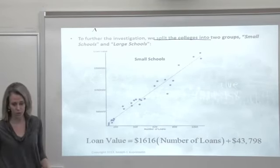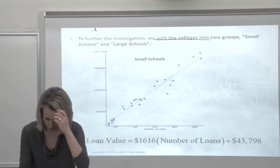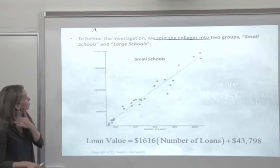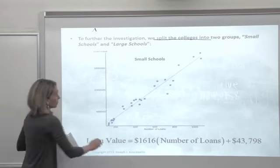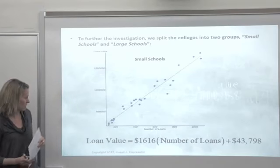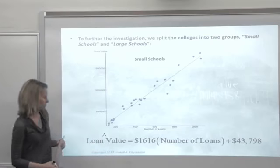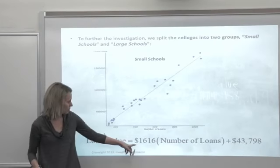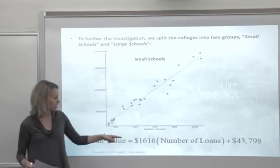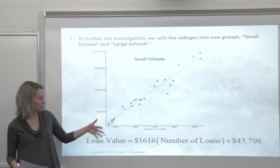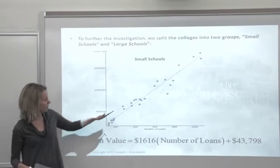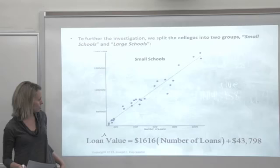In your notes, you have two scatter plots there and two new regression lines. If we split the colleges into two groups, we're going to call them small schools and large schools. Here's the small schools. And here's our new regression equation. Now the predicted loan value is 1,616 times number of loans plus almost 44,000. And here's the regression line with those schools.